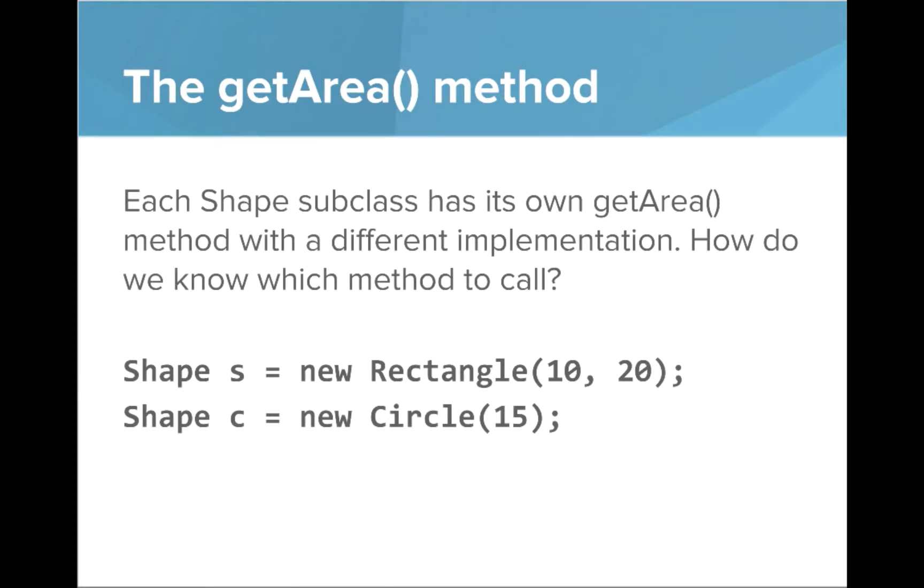And let's talk a little bit more about that getArea method. So each shape subclass has its own getArea method with a different implementation. But how do we know which method to call? And if you look in this example code below, we say shape s equals new rectangle, shape c equals new circle, you can see the type of those variables over on the left is shape.